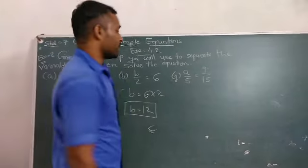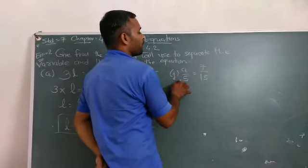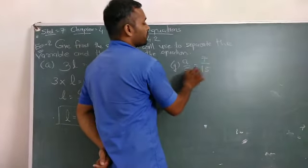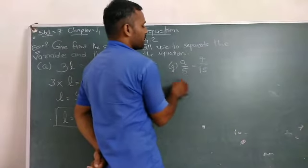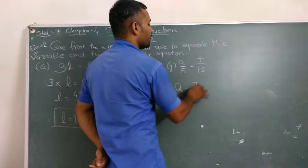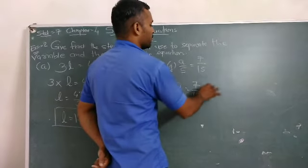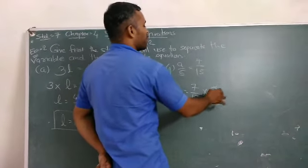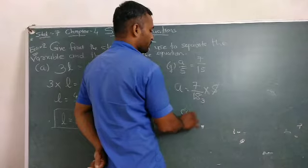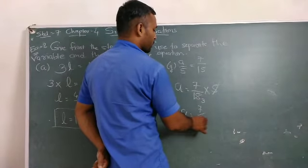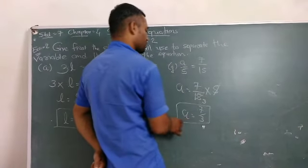Okay, next. a upon 5 is equal to 7 upon 15. 5 is in the division. So now, it will be multiplication. So, 5 divides 15, giving 7 upon 3.